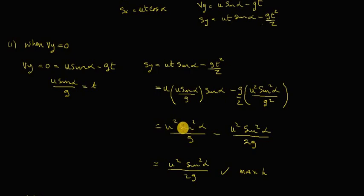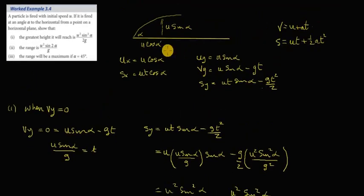We simplify that, then we're going to get, this is like a u squared sine squared alpha divided by g minus u squared sine squared alpha over 2g, so that's like a half of it. So the answer is u squared sine squared alpha over 2g, and that's our max height, which is what they've asked us to show. Done.